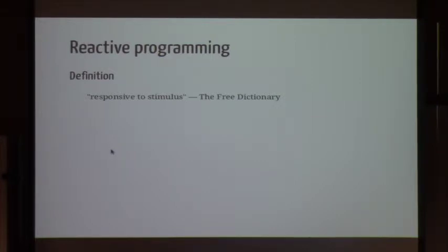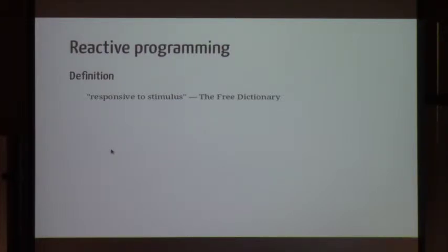Reactive programming. What is reactive? It means responsive to stimulus. In computing terms, that means when some event happens, we do something. Day in and day out, we operate on stimulus: user inputs, other services, and we do things based on that. Don't let people confuse you with other things — that's the simplest form you need to understand.